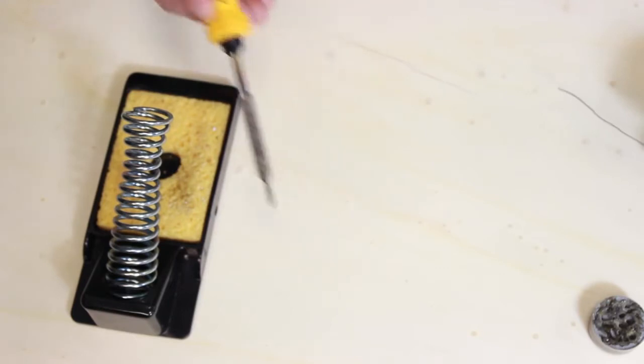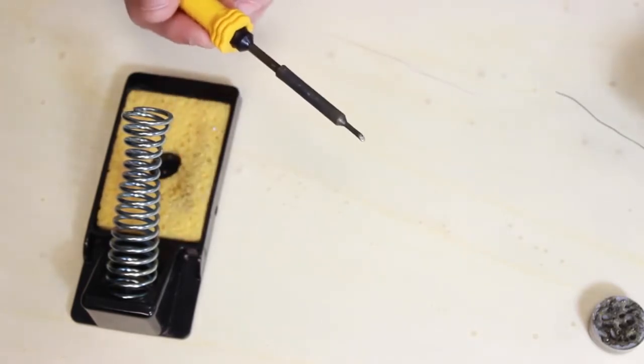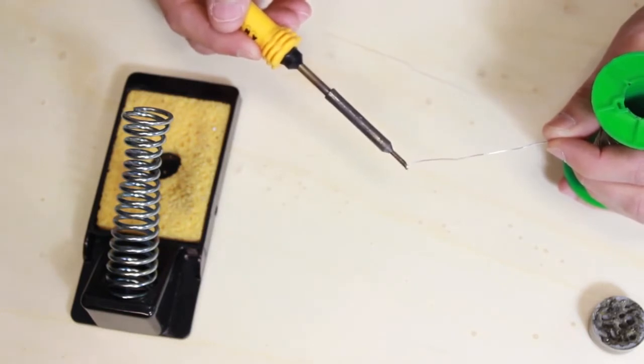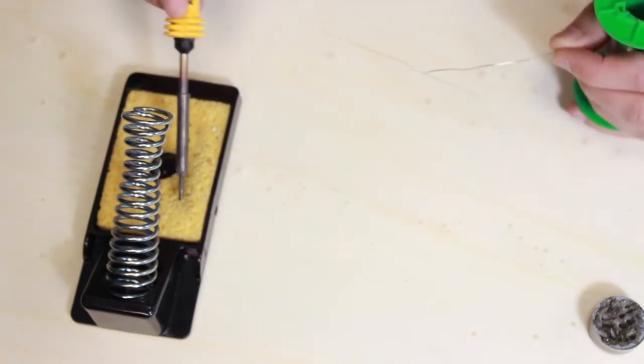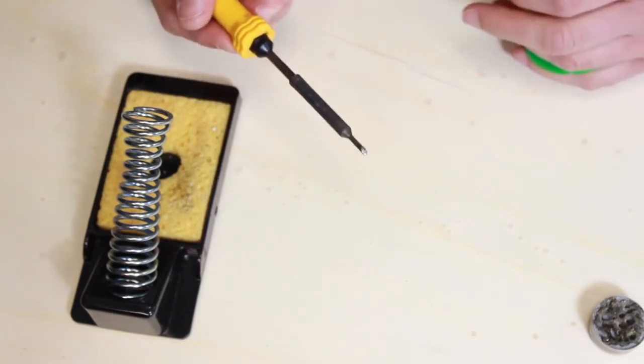So I'm going to start off by wiping my soldering iron tip through this damp sponge to remove any excess solder, dirt or carbonated material. I'm then going to run some solder onto the tip. We call this tinning and wipe away the excess. We can see it's already starting to look quite shiny.